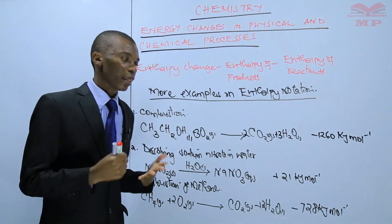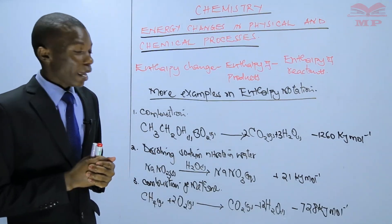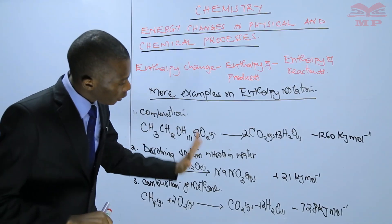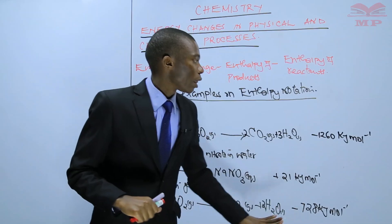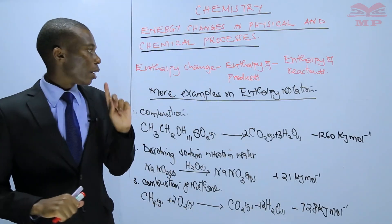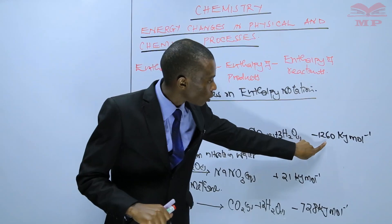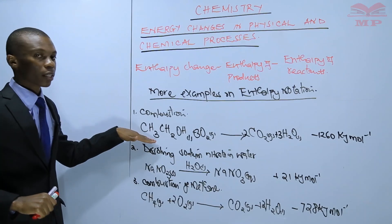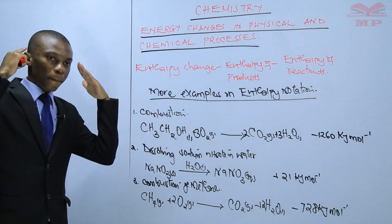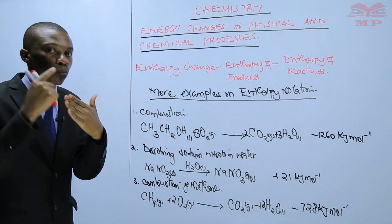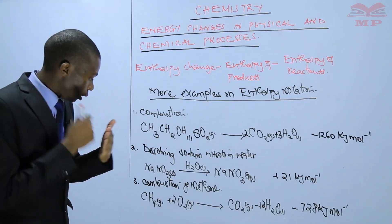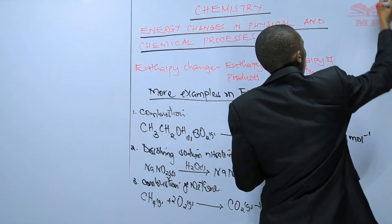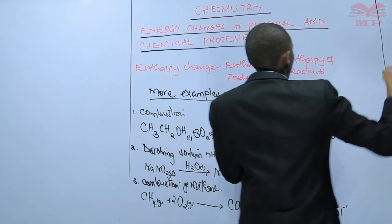These enthalpy changes are molar enthalpy changes. Negative 1260 kilojoules per mole is realized when you burn one mole of ethanol in oxygen — not methane, but ethanol. One mole of ethanol in oxygen gives you that value.